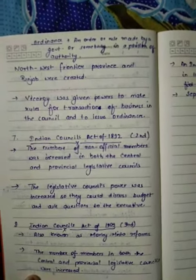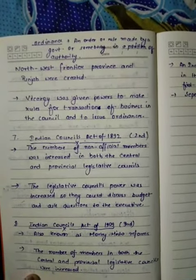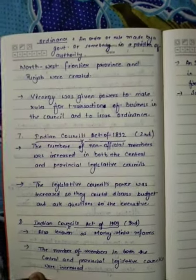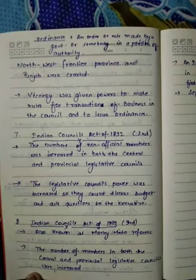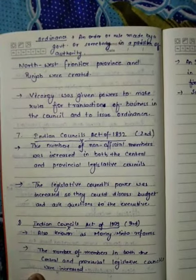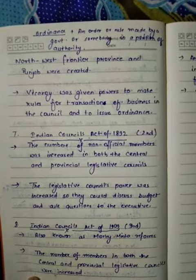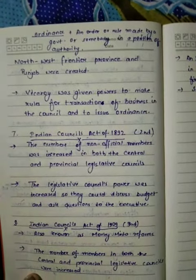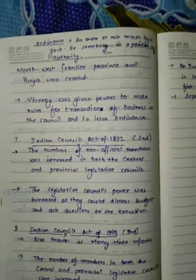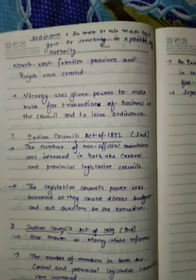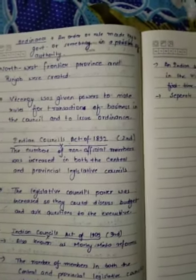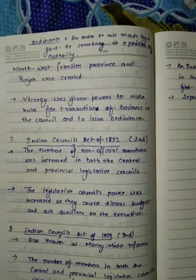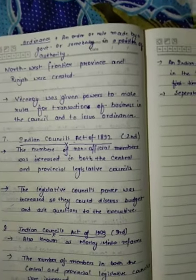The second Indian Councils Act was established in 1892. In this act, the number of non-official members was increased in both the central and provincial legislative councils. Also, the legislative councils' powers were increased so that they could now ask questions to the executive and also discuss the budget.